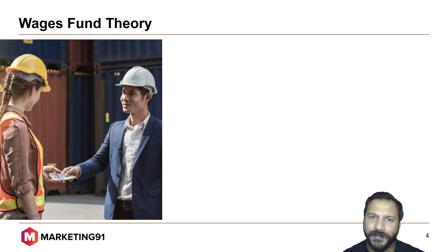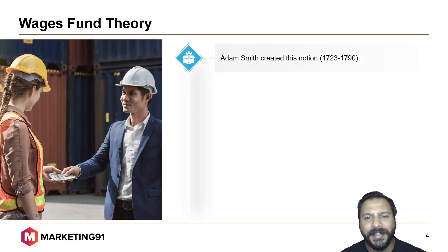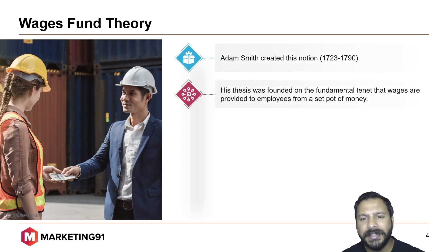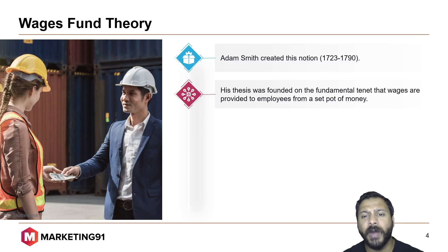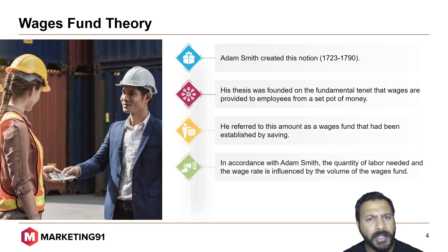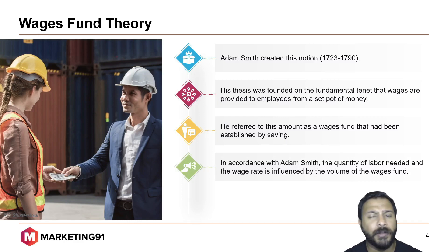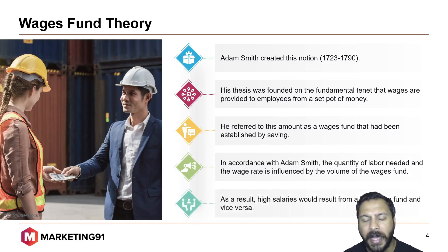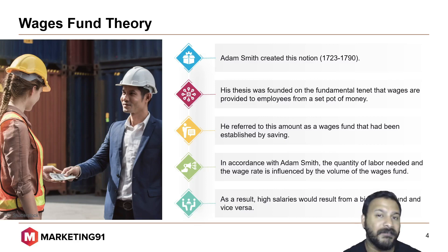Moving on to the next one, the wages fund theory. Adam Smith created this notion. His thesis was founded on the fundamental tenet that wages are provided to employees from a set pot of money. He referred to this amount as the wages fund, which had been established by saving. In accordance with Adam Smith, the quantity of labor needed and the wage rate is influenced by the volume of the wage fund. As a result, higher salaries would result from a big wage fund and vice versa.